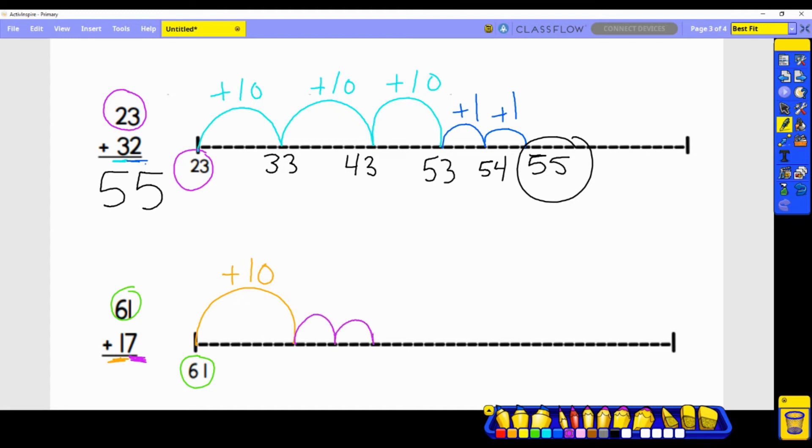So let's draw our seven jumps. One, two, three, four, five, six, seven. And they all have a value of one. Let's do our math. We jumped 10 places from 61 to 71. That means that this jump is 72, 73, 74, 75, 76, 77, and last 78. So the sum of 61 plus 17 equals 78.